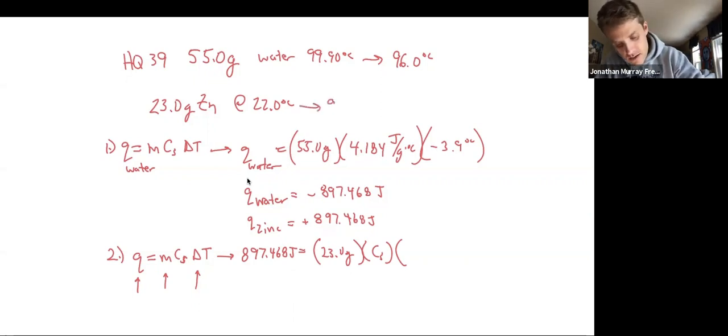22 degrees, and it goes to 96 degrees Celsius. So a 74 degree temperature change for the zinc.